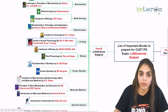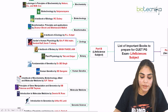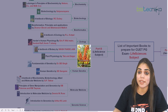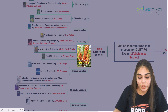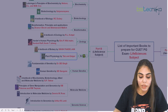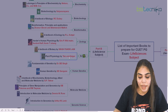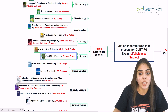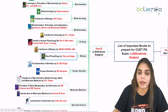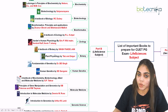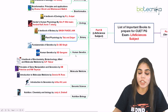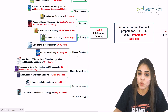For botany, I have mentioned two options. The first is A Textbook of Botany by Singh and Pandey. Or if you want a more detailed version, you can refer to Plant Physiology by Taiz and Zeiger. You can either download the Taiz and Zeiger book and start preparing for the botany subject.